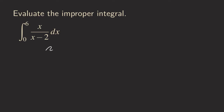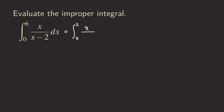Now for the third improper integral. This function is not continuous at two, and we're integrating over the interval from zero to six, and two lies within that interval, so the function is not continuous on the interval. What we do is write it as the sum of two improper integrals: the integral from zero to two of x over x minus two dx, plus the integral from two to six of x over x minus two dx. If both converge, the original converges; if one diverges, the original diverges.